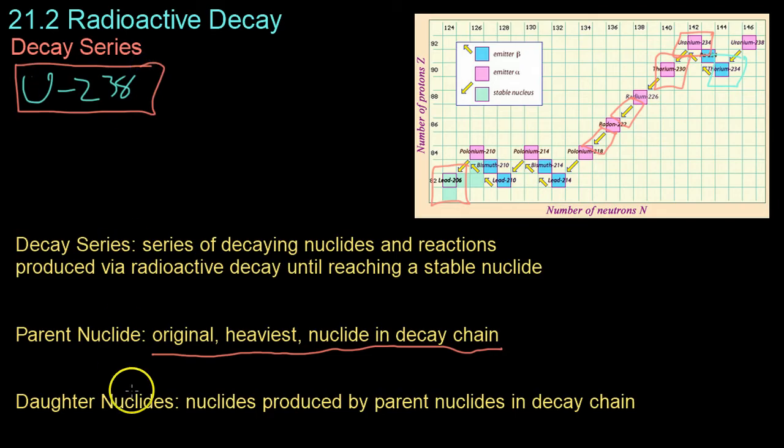And the daughter nuclides are nuclides produced by the parent nuclides in the decay chain. In this case, that would be thorium-234. In the case of this chart, you have the number of neutrons listed on the x-axis and the number of protons listed on the y-axis. So when uranium first alpha decays into thorium-234, you drop by two protons and move to the left by two neutrons.